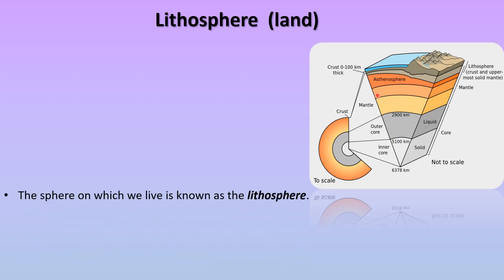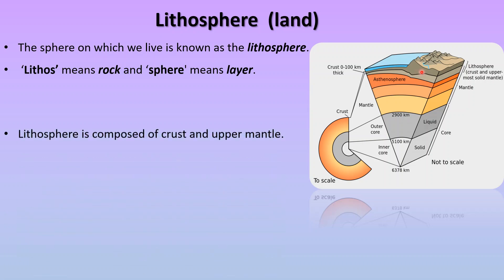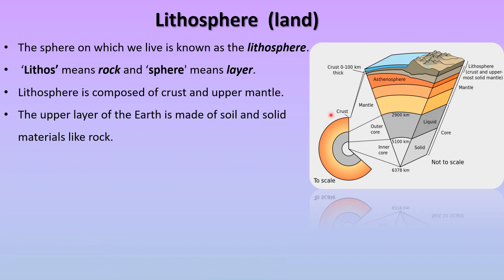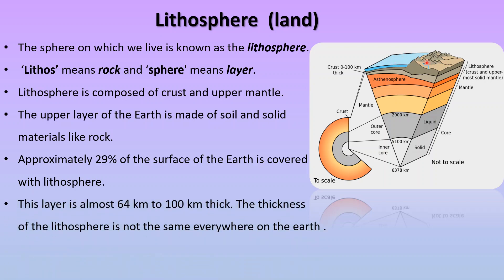Lithosphere: the sphere on which we live is known as the lithosphere. 'Lithos' means rock and 'sphere' means layer, so the meaning of lithosphere is 'layer of rock'. The lithosphere is composed of the crust and the upper mantle. The crust, mantle, and core are the three layers of the Earth. The upper layer of the Earth is made of soil and solid materials like rock. Approximately 29% of the surface of the Earth is covered with lithosphere. This layer is almost 64 km to 100 km thick.